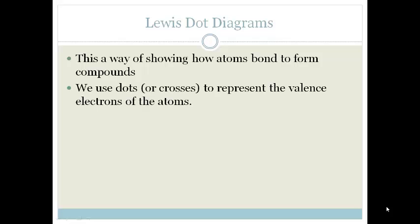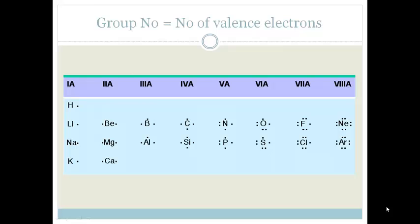We use dots or crosses to represent the valence electrons of the atoms. Do you remember what I told you about valence electrons and the group numbers of the periodic table? Group 1 tells you've got 1 valence electron. Group 2 we've got 2 valence electrons. Group 3 we've got 3 valence electrons.